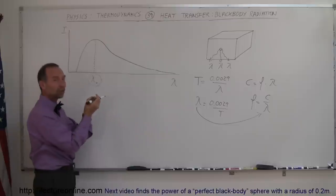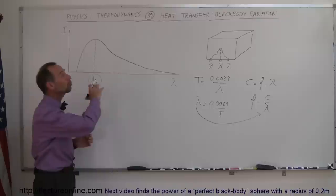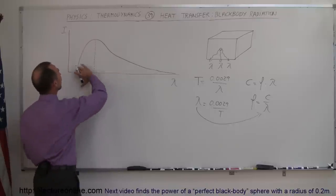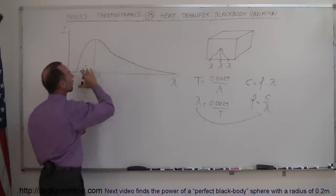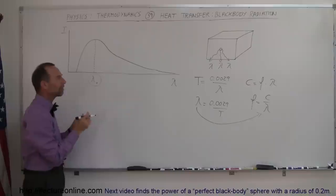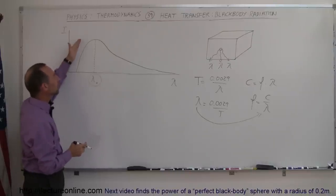When we study the radiation coming out of a box like that, we notice that it's not a single frequency or a single wavelength that comes out, but a distribution of wavelengths. Here I have drawn a curve that represents a distribution of the wavelengths coming out of that box. This is known as the blackbody radiation curve.